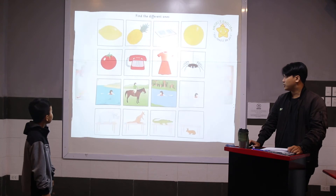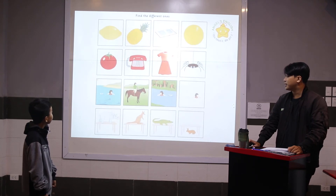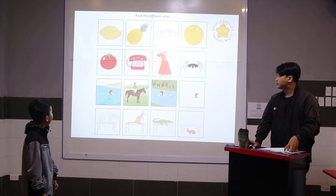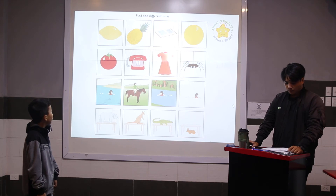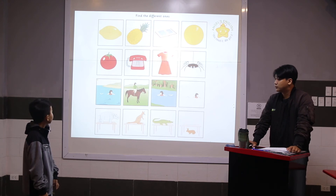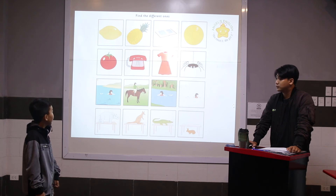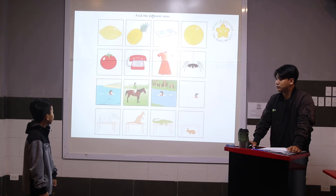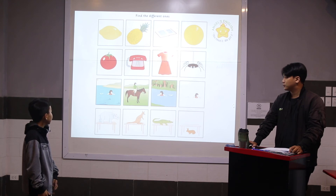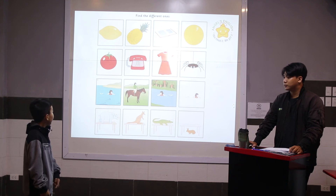Okay, very good. Now, finally, what's different in these pictures? The book is different because the lemon, the pie, the apple, and the orange are fruit. The spider is different because the tomato, the telephone, and the dress are red. The second picture is different because in the first picture, the third picture, and the fourth picture, the girl is screaming.